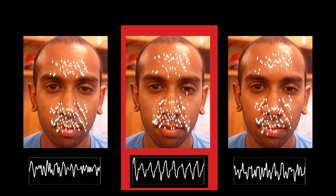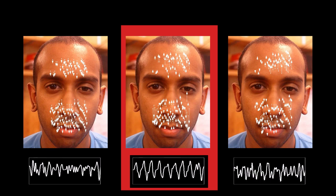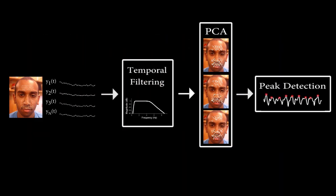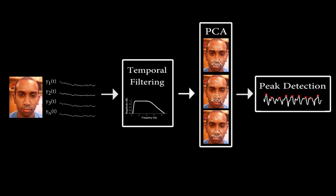We use the dominant frequency to obtain an average pulse rate. Finally, we perform peak detection on the chosen signal to obtain beat locations for further analysis such as heart rate variability.